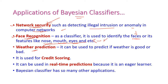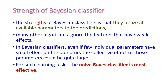The next application is weather prediction, where we can easily identify whether the weather is good or bad. The next one is credit scoring, and apart from that, real-time predictions. Because the Bayesian classifier falls under the eager learning category, it can easily be used for all real-time predictions. We can also use the Bayesian classifier for other applications as well.